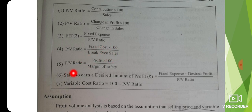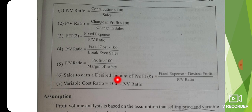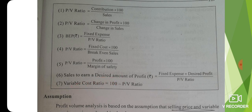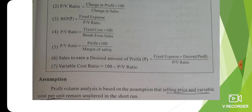Margin of safety is profit divided by PV ratio, multiplied by 100. Sales to achieve desired profit is fixed expenses plus desired profit divided by PV ratio. Variable cost ratio is 100 minus PV ratio.